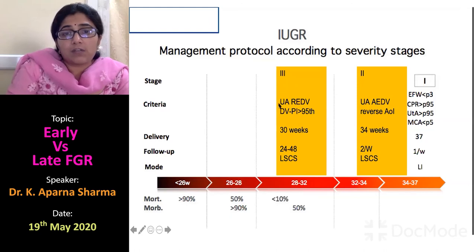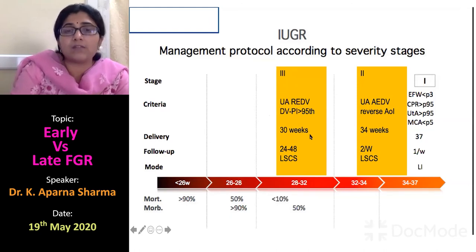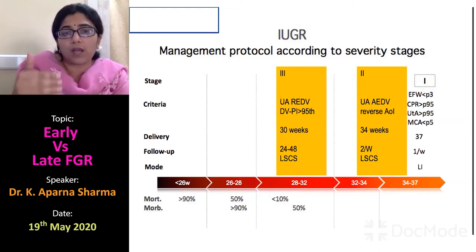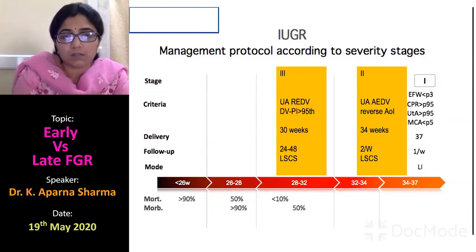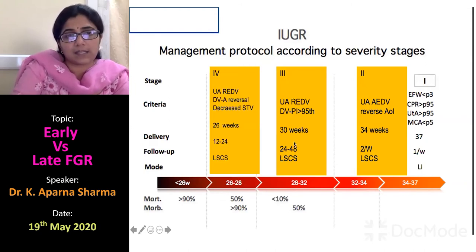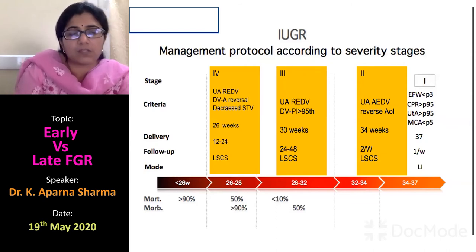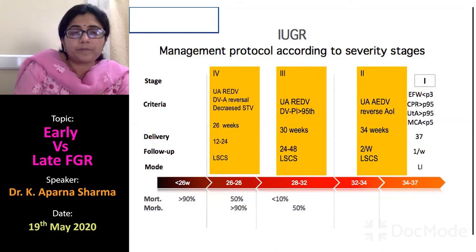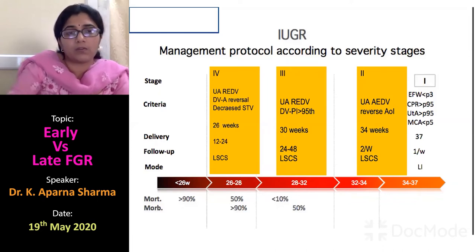In stage three — reversed end-diastolic flow — the upper limit of delivery is 30 weeks. If diagnosed at 30 weeks, deliver at 30 weeks; if diagnosed at 26 weeks, consider EFW, nursery availability and capability, then deliver accordingly. Follow-up must be daily for REDF and mode of delivery is LSCS. Stage four — DV A-wave reversal — requires prognostication based on EFW. Counsel the patient carefully on outcomes and deliver as soon as DV reversal is diagnosed.